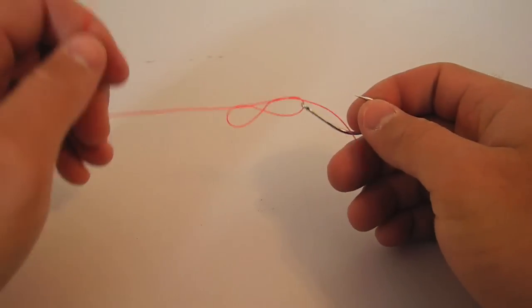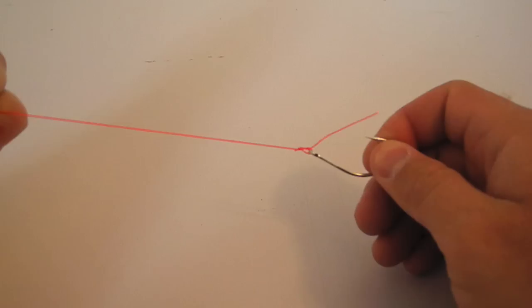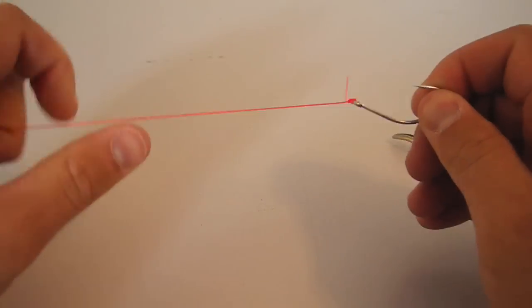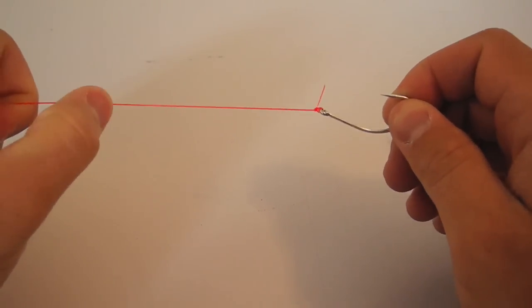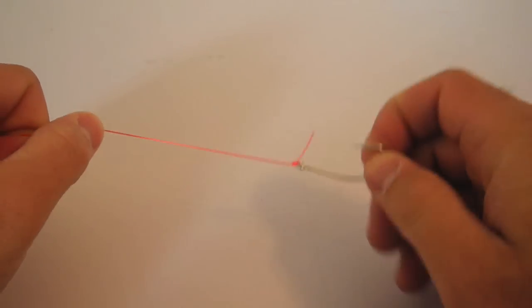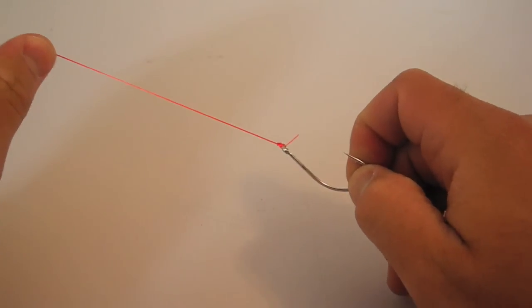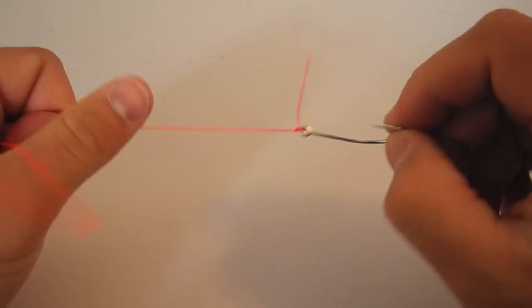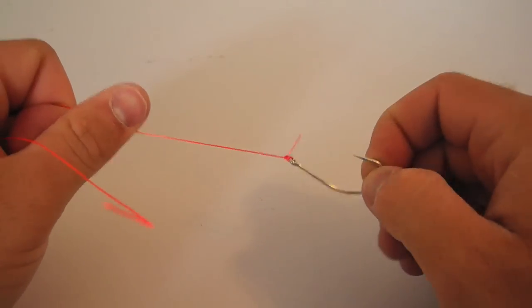Once you've done that, you've basically tied the knot. All you have to do is cinch it down by pulling on the standing line and wet it to reduce friction and avoid breaking your tippet. And that's kind of a little shortcut to tie your clinch knot.